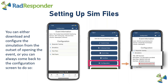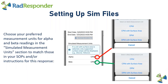Once your simulation file has been downloaded, you can choose your preferred measurement units for alpha and beta readings in the Simulated Measurement Units section. You can have these match your SOPs or preferred method. Options include CPM, CPM with surface area, DPM, and DPM with surface area for both alpha and beta.